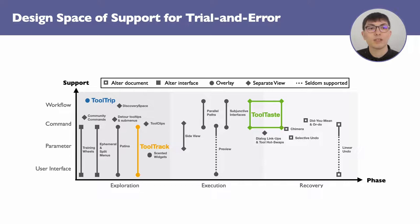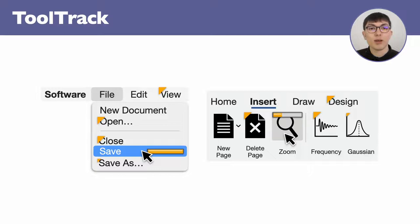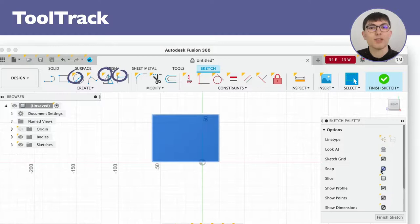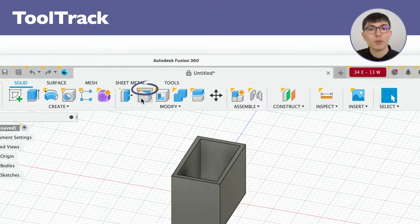ToolTrack keeps track of users' progress during trial and error, to prevent them from retrying irrelevant commands or discarding commands too early. We do so by displaying discrete yellow triangles on all commands and parameters that have never been explored. We also show a progress bar on hover to indicate how much of a specific command has been explored.